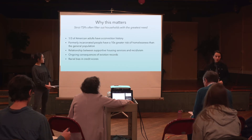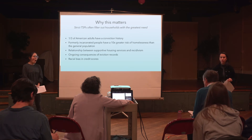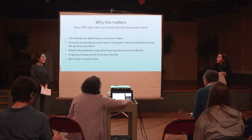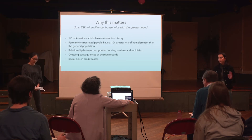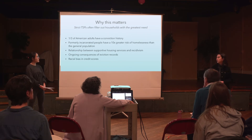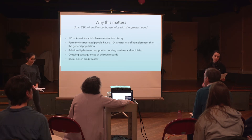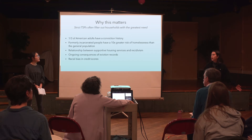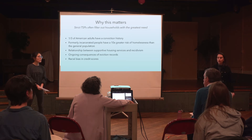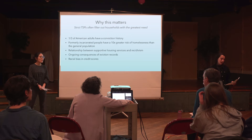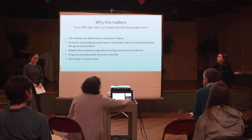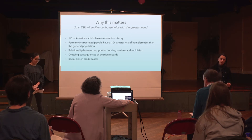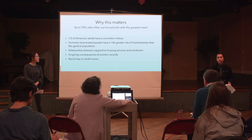The stricter the TSP, the more families get filtered out — and often those are the families with the greatest need. One group with a really high need is people with criminal histories, which makes up about one-third of adults in America. With a criminal history come many collateral consequences, and lack of access to housing is one of them. Formerly incarcerated people are at a ten times greater risk than the general population for homelessness.